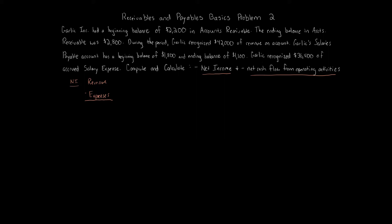The beginning balance in accounts receivable does not go on revenues or expenses. The ending balance of $2,800 is also a balance sheet item. During the period, Garlic recognized $42,000 of revenue on account — that is revenue. Garlic's Salaries Payable beginning balance of $1,800 and ending balance of $1,100 are on the balance sheet, not the income statement. Garlic recognized $36,400 of accrued salary expense. So revenues are $42,000, expenses are $36,400, giving us net income of $5,600.